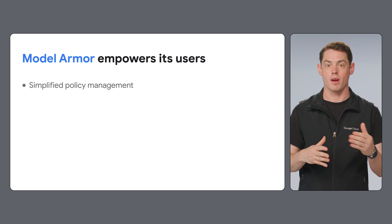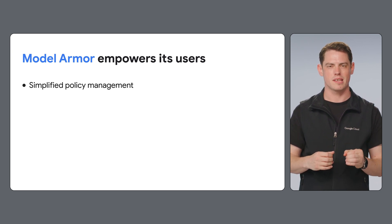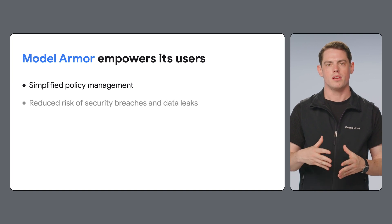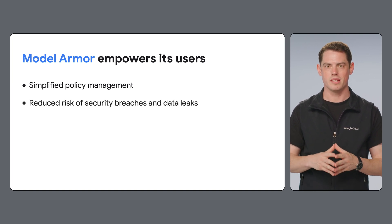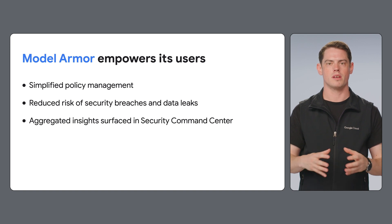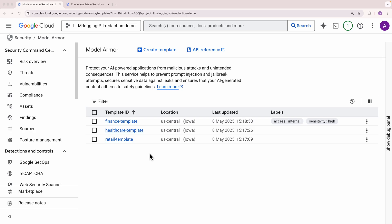Model Armor empowers you with granular control over your model's interactions. It's easy to fine-tune settings and gain actionable insights from analytics. You can mitigate the risk of breaches and data leaks, all while getting a clear, aggregated view of your security posture in Security Command Center. Setting up your security controls is simple with Model Armor's templates — just choose a pre-built template or create your own from scratch, tailoring it to your specific needs.